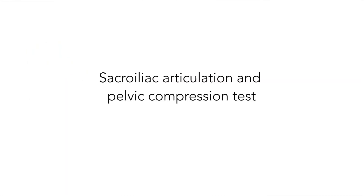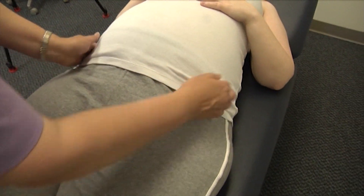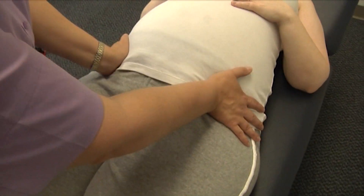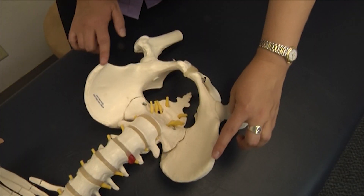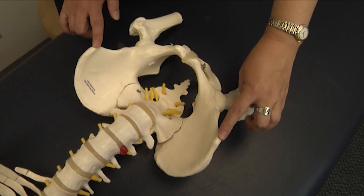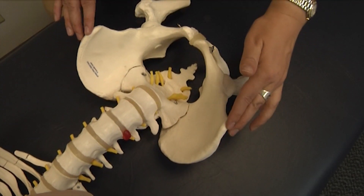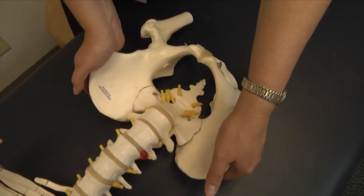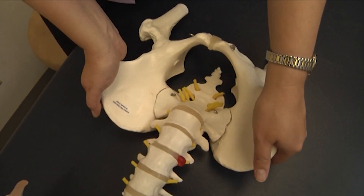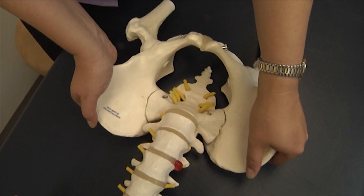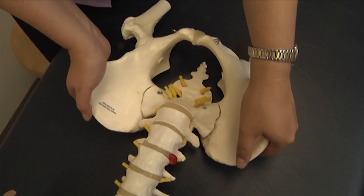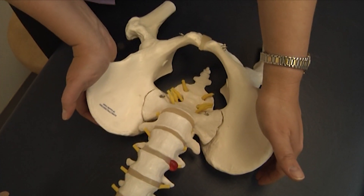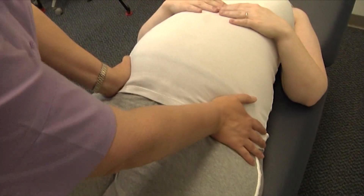The pelvic compression test. In the PROMOTE study, the only purely diagnostic technique that was used was the pelvic compression test. This test is used to assess sacroiliac motion and restriction. The landmarks to locate are the ASISs, the anterior superior iliac spines. The heels of both hands are placed on the ASISs and an alternating force is directed posteriorly through the ASISs to rock the ilia on the sacrum. The more dysfunctional side will feel harder with less motion.